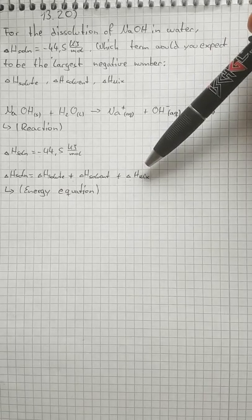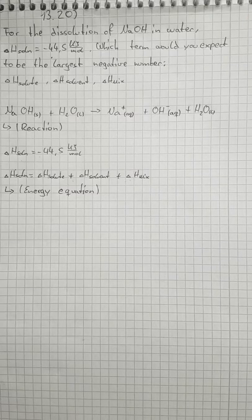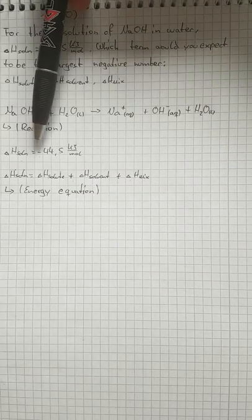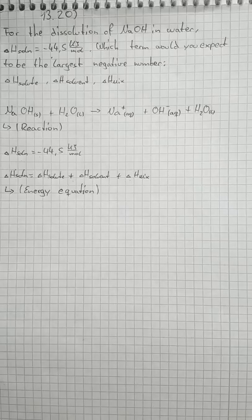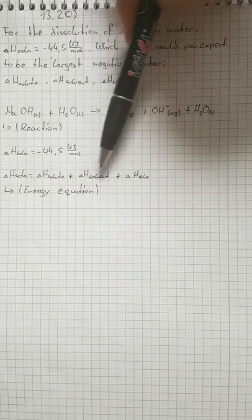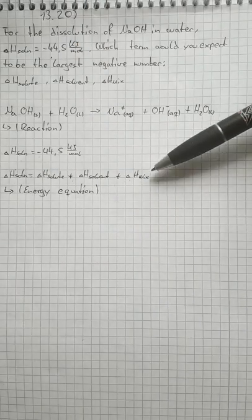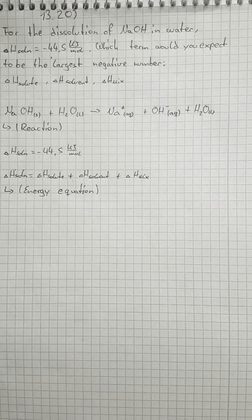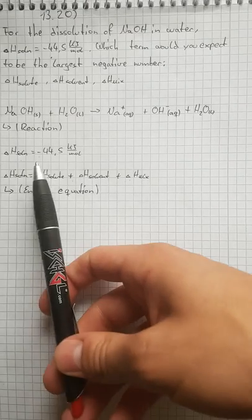That means delta H mix has to be the largest negative number to reach minus 44.5 kilojoules per mole, because the solute and solvent parts are endothermic while the mixing is exothermic, and overall the reaction is exothermic.